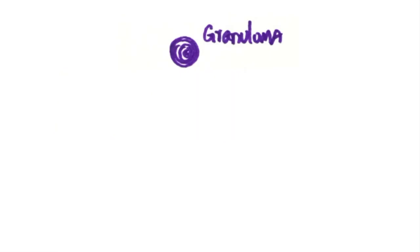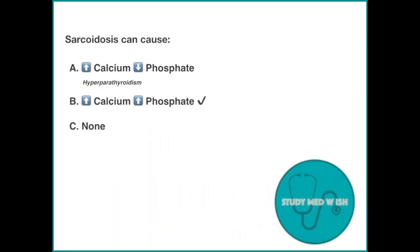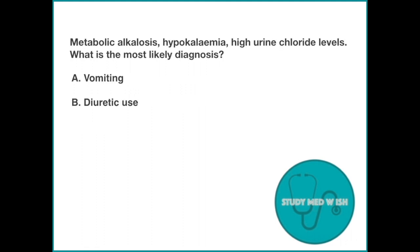Sarcoidosis is characterized by non-caseating granulomas. The macrophages produce 1-alpha hydroxylase. 1-alpha hydroxylase activates vitamin D. This results in increased calcium as well as phosphate levels. High calcium and low phosphate levels is seen in hyperparathyroidism.